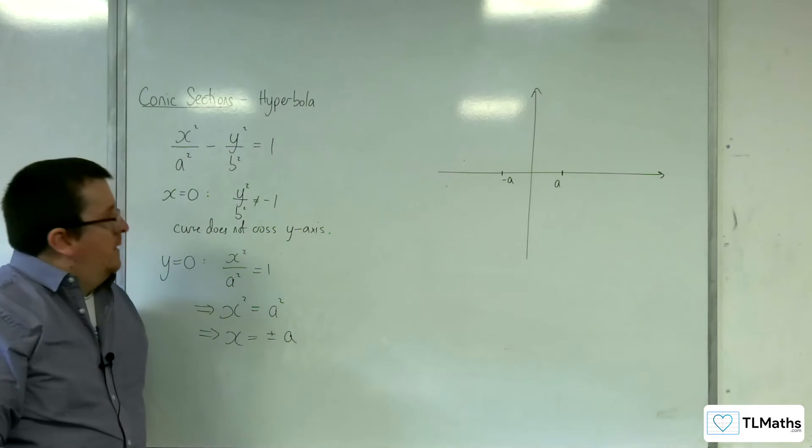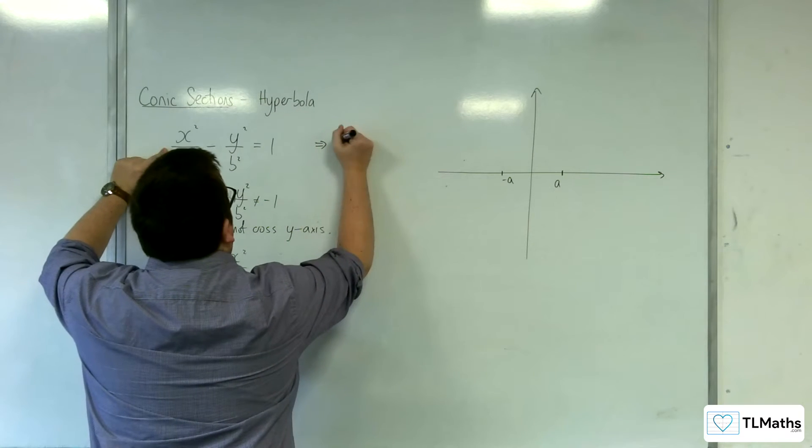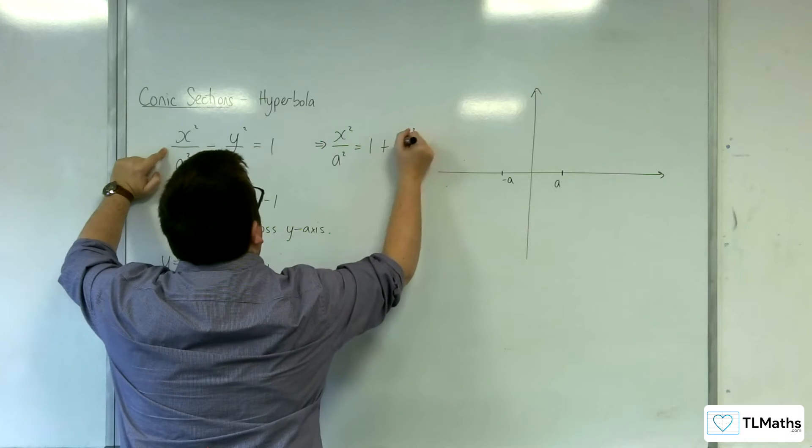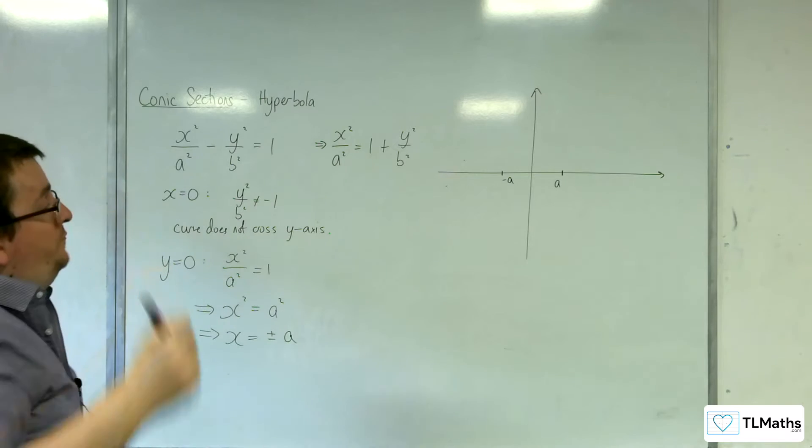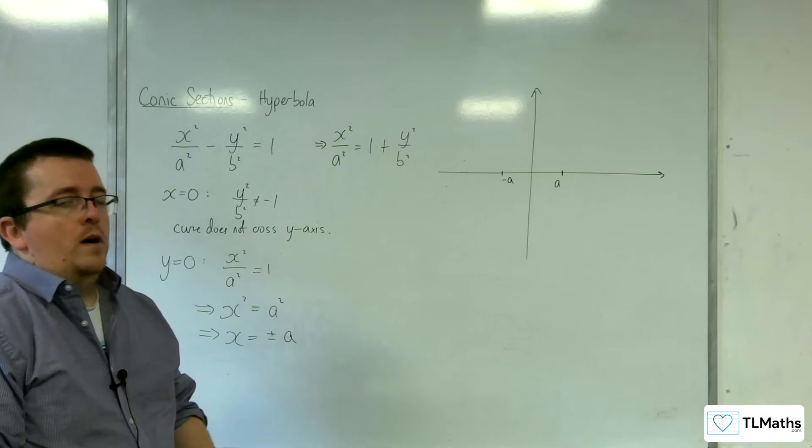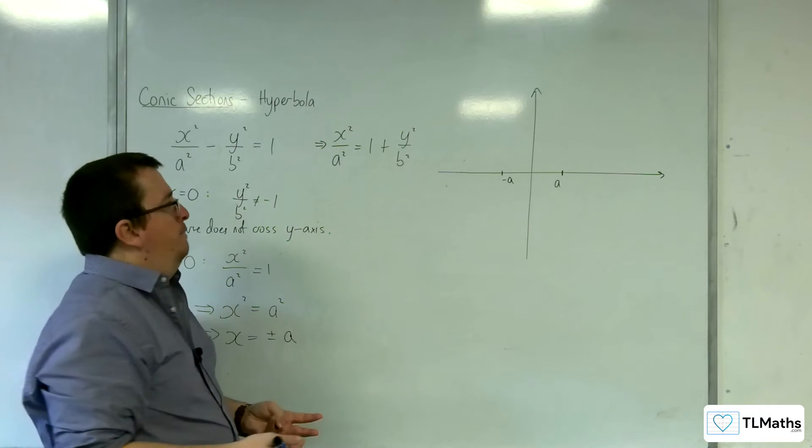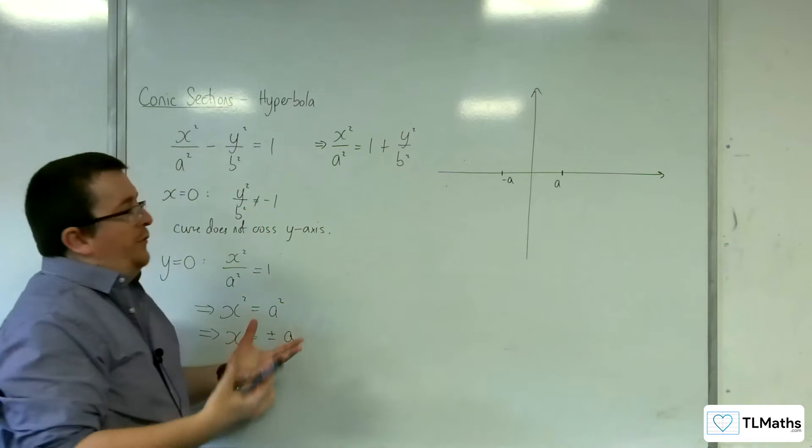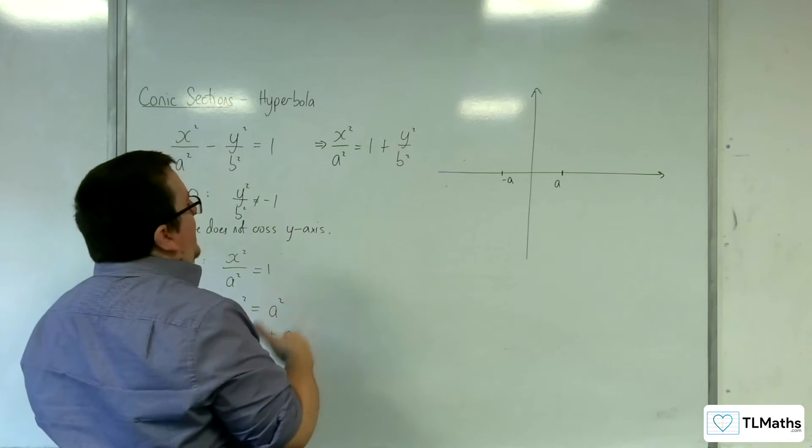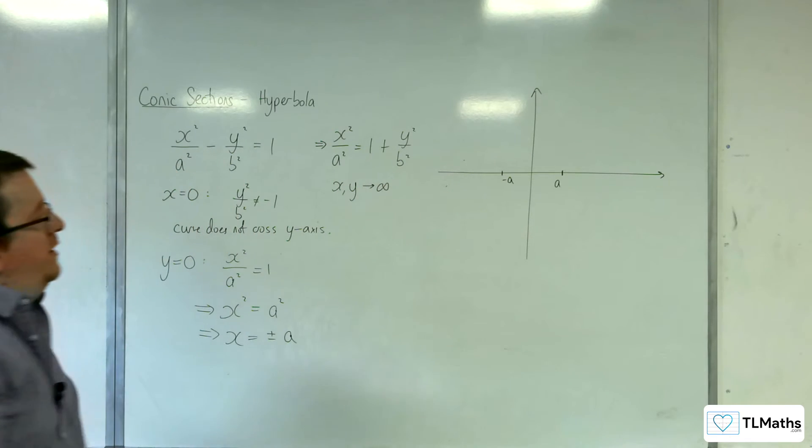Now, taking a look at this, if we rearrange this to get x squared over a squared is equal to 1 plus y squared over b squared. Then if we consider what happens when both x and y get very large, either in the positive or negative direction, because we'd have the same situation, wouldn't we? Because you're squaring both of them.